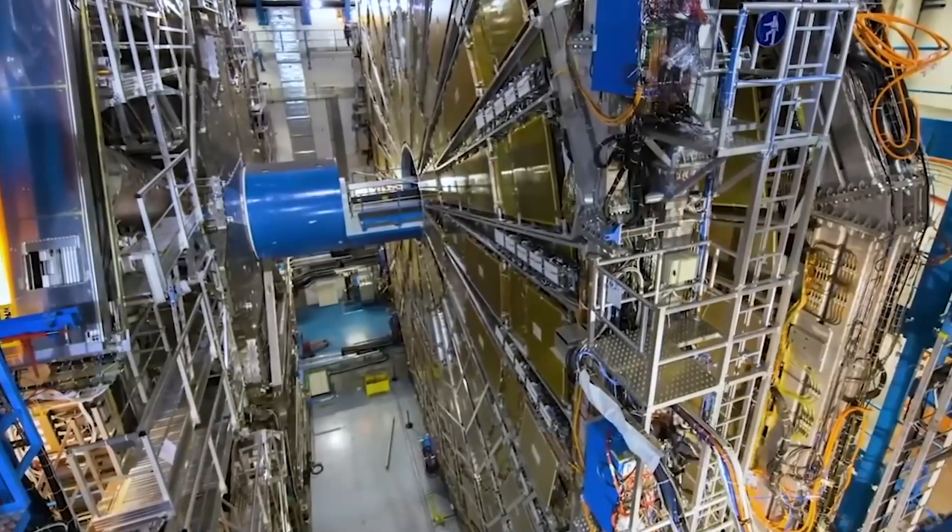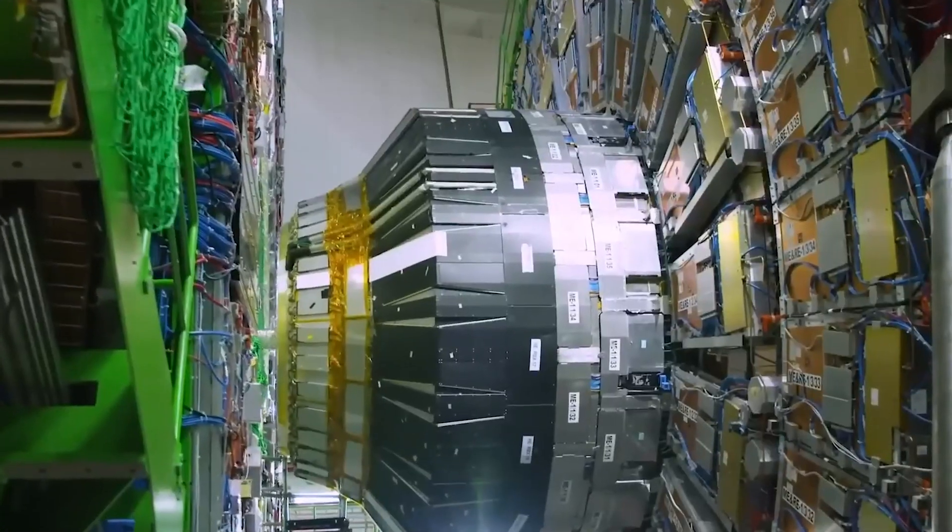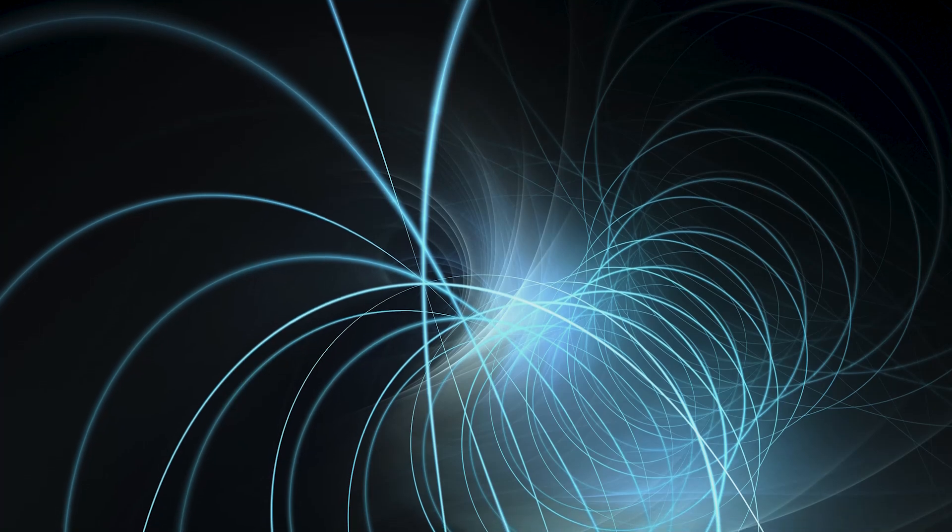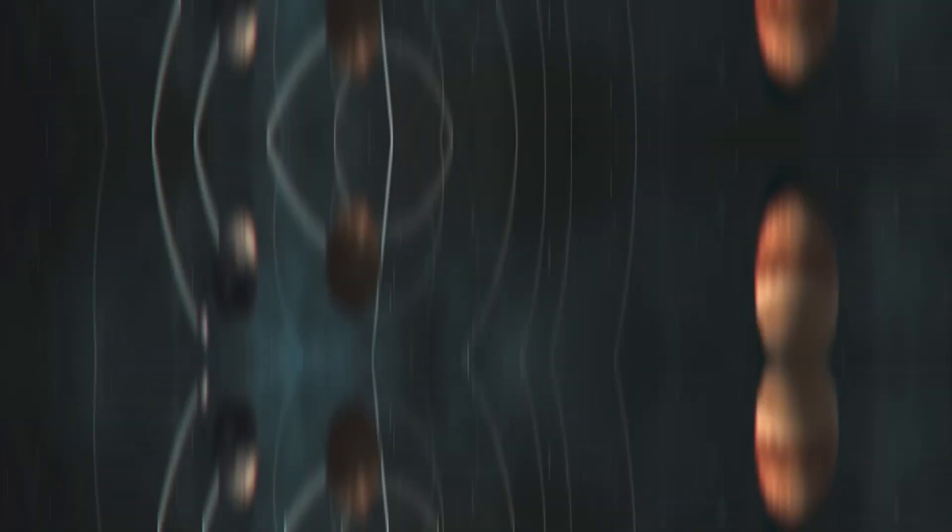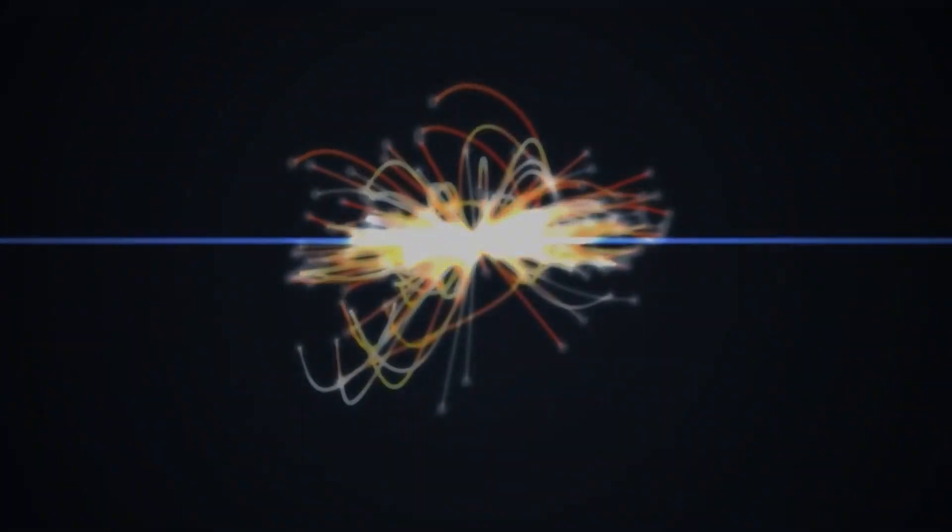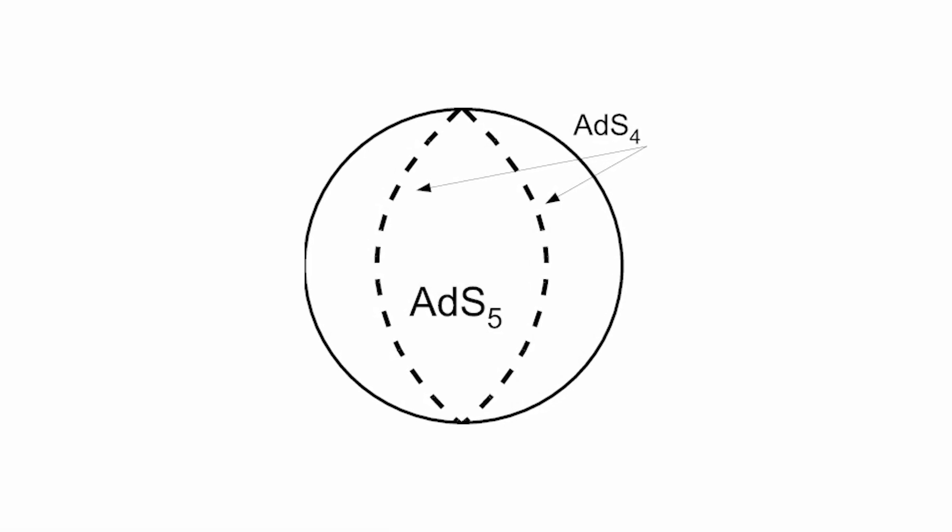Yet, unlike the Higgs boson particle observed by the Large Hadron Collider in 2012, this scalar particle is too heavy for the current collider's capabilities. To understand this WED model, picture a universe molded by warped geometry, where the very fabric of existence is made up of a five-dimensional anti-de Sitter space, ADS-5.